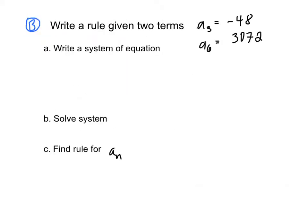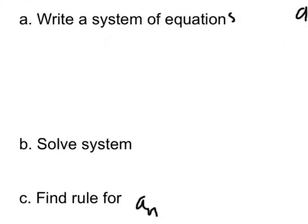Next, we're going to write a rule given two terms. These are the third term, or a sub 3, which is negative 48, and our sixth term, or a sub 6, which is 3072. So we're going to write a system of equations, similar to our arithmetic problem. So we're going to substitute 3 for n in our first equation, which will give us a sub 3 equals a sub 1 times r to the 3 minus 1, which is negative 48.